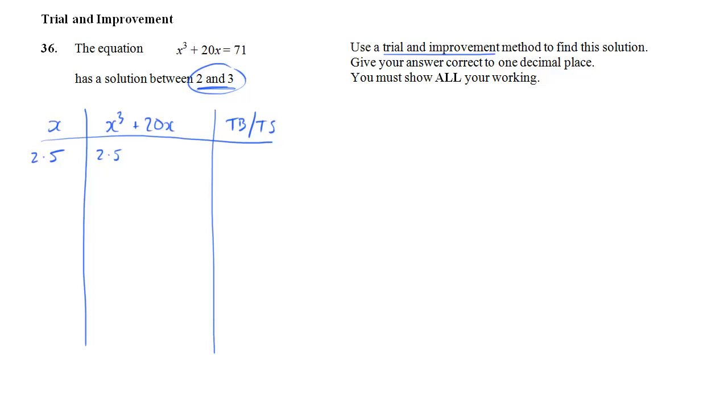We work out 2.5 cubed plus 20 lots of 2.5. And we stick that on the calculator, and we get 65.625. Comparing it to 71, that is definitely too small. We need a bigger value of x for our solution.